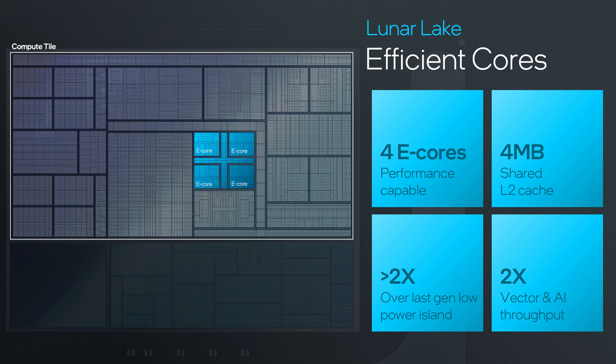We also moved from a Crestmont low power core to a Skymont low power module. On Crestmont we had two cores, a two megabyte L2. With Skymont we have a new microarchitecture — we made enhancements to power and performance, we have four cores and a four megabyte L2. The net combination of those means not only is power better, but there are so many more workloads you can run on this low power island that it's really a game changer when it comes to battery life, power efficiency, and usability.